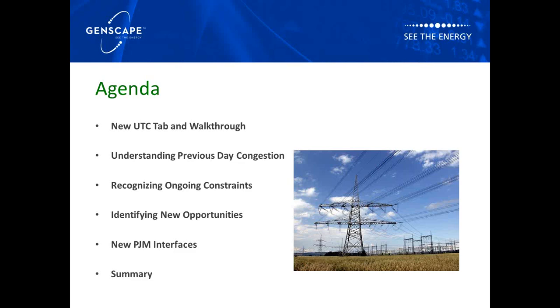In terms of the agenda, the first piece we're going to go into is the UTC tab itself that we've created in our next day reports. We're going to walk through the tab and what's encompassed there. Next, we're going to go into three separate parts using examples: understanding previous day congestion, recognizing ongoing constraints, and identifying new opportunities. The last piece will look at some new PJM interfaces recently created, and then we'll wrap up with a summary.